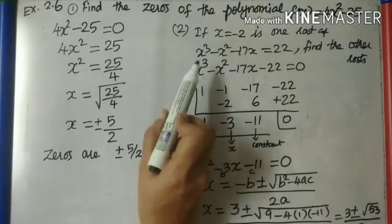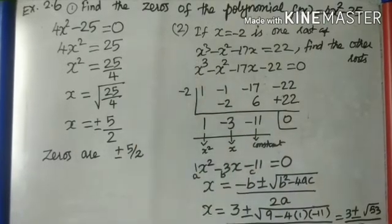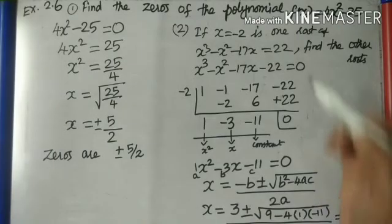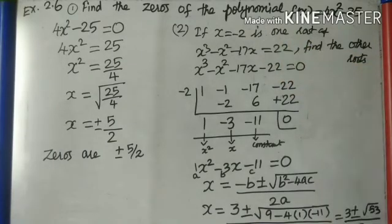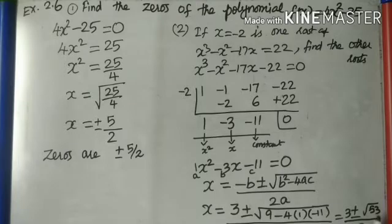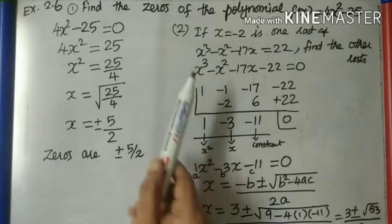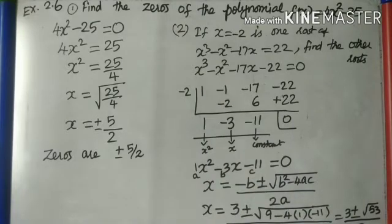The degree of the polynomial is 3, so we must get 3 answers. One answer is x = -2. The other two answers are (3 + √53)/2 and (3 - √53)/2. Whenever the degree is 3, we must be able to get 3 answers.